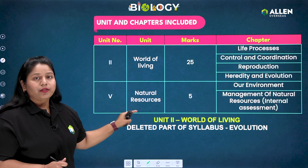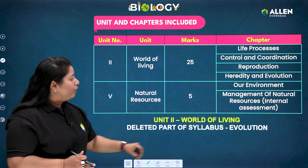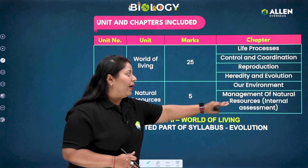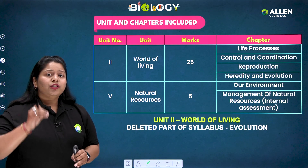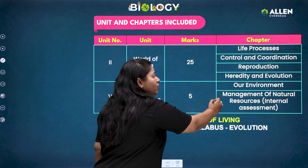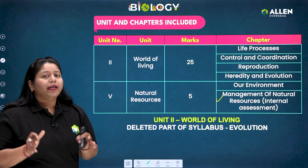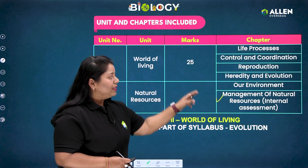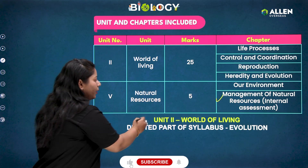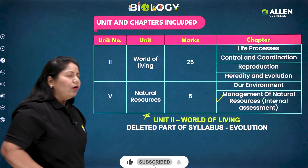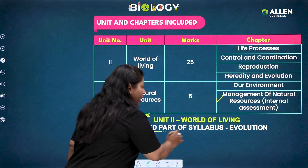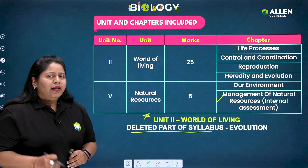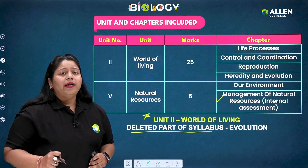The next unit we have is Unit 5, that is 'Natural Resources.' Its weightage is 5 marks and it includes two chapters: 'Our Environment' and 'Management of Natural Resources.' This chapter on management of natural resources is especially included in your internal assessment. Most importantly, we have to remember that Unit 2, World of Living, has a deleted part of syllabus that includes evolution.